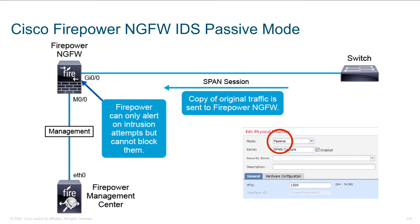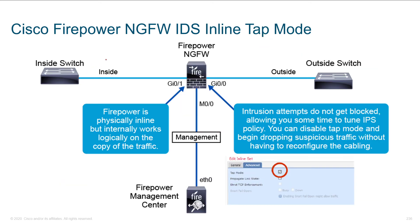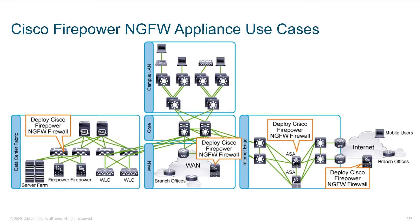Here you see an example of deploying next generation firewall in passive mode. The physical interface has been set to passive, meaning we're attached to a LAN tap — traffic is being transferred to us but this interface is just sitting here listening and watching. Alternatively, you can create an inline set, which allows us to place an IDS as though it's an inline tap, and we can also do IPS in a very similar manner.